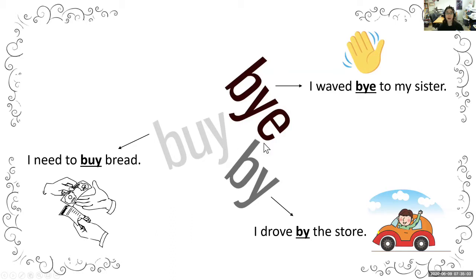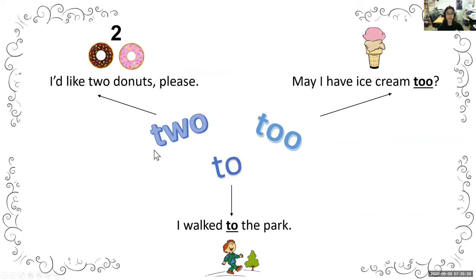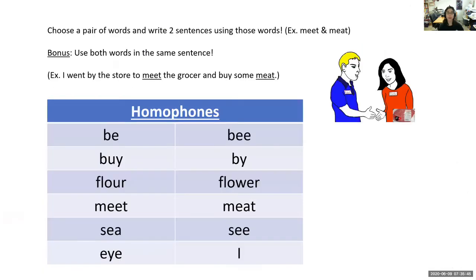Here are examples of sentences using homophones. For bye as in goodbye: 'I waved bye to my sister.' For by as in a preposition: 'I drove by the store.' For buy as in purchasing: 'I need to buy bread.' For two as the number: 'I'd like two donuts please.' For too as in also: 'May I have ice cream too?' And for to as the preposition: 'I walked to the park.'